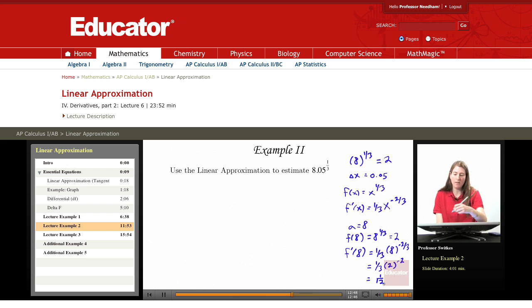Those are all the pieces of the puzzle that we need in order to construct L of x. So L of x is supposed to be f of a plus f prime of a times x minus a. f of 8 worked out to 2, f prime of 8 worked out to 1 twelfth, and then we have it times x minus 8.